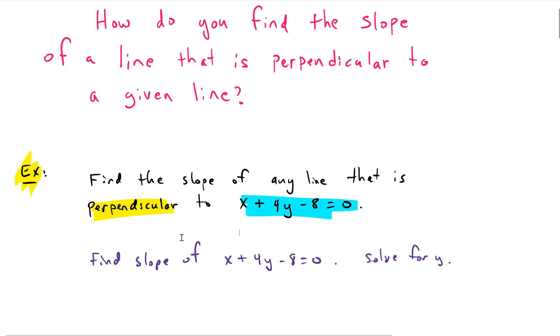So, let's find the slope of the line that's perpendicular to the line in blue that we're given, x plus 4y minus 8 equals 0. And it might be hard to visualize this.